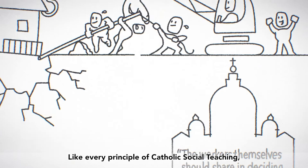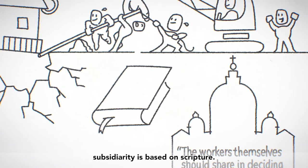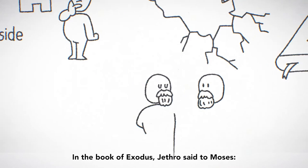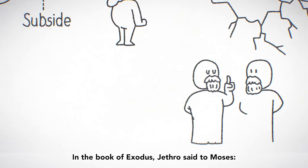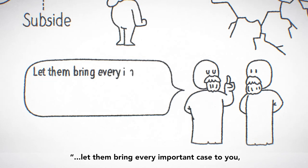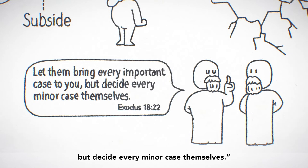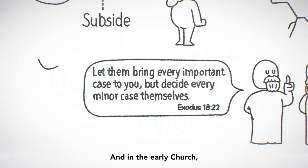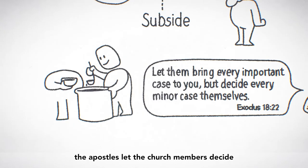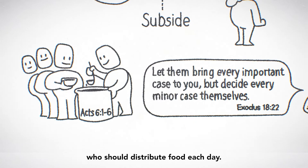Like every principle of Catholic social teaching, subsidiarity is based on scripture. In the book of Exodus, Jethro said to Moses: let them bring every important case to you, but decide every minor case themselves. And in the early church, the apostles let the church members decide who should distribute food each day.